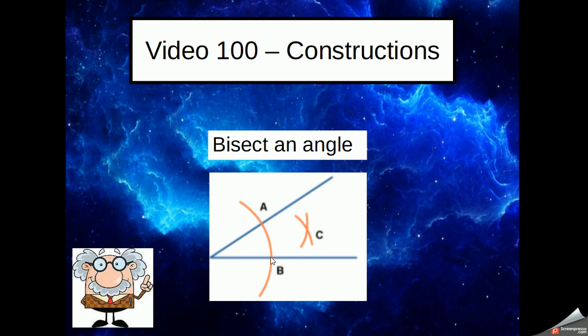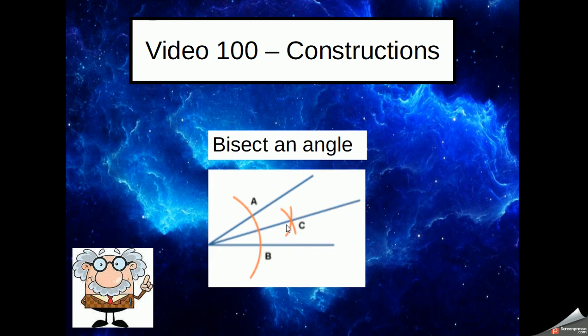The metal point goes where your original arc cut the first line and do a small arc. Then we do the same on this side. So the metal point goes where the arc cut the second line and do another arc. And what you'll find is you have a little crisscross. And we can simply join up where those two arcs meet with the original point. And that is now an angle bisector.